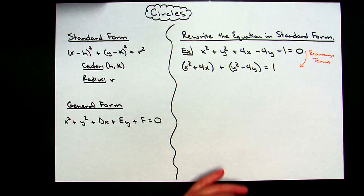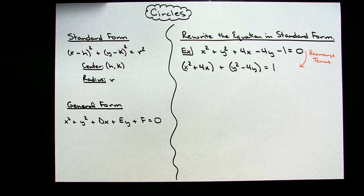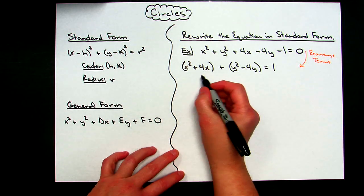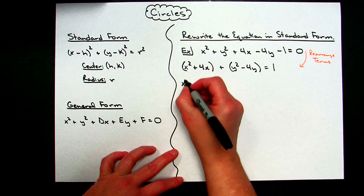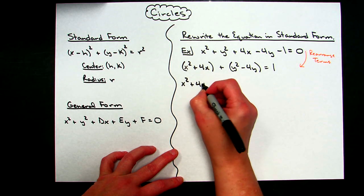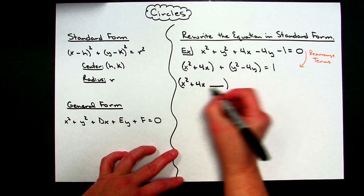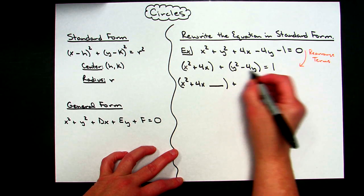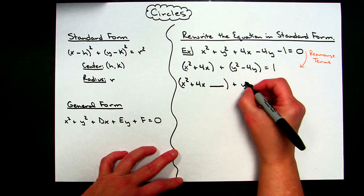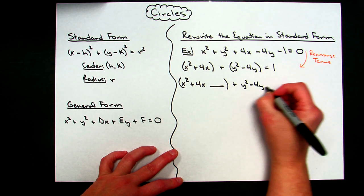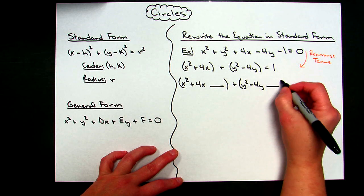Now what I'm going to do is set this up for completing the square. So I'm going to go x squared plus 4x and I'm going to leave myself a place for me to complete the square right there. I'm going to do it on the y's as well: y squared minus 4y and I'm going to leave myself a place there to complete the square.